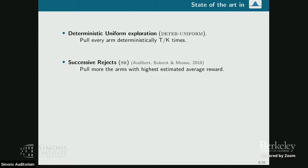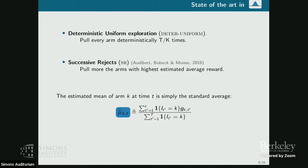Now let's look at the state of the art in the stochastic setting. The most basic approach is uniform exploration: divide budget T equally among K arms, giving T/K pulls each. That's not the smartest thing, because once you start pulling arms, some are clearly suboptimal, so you can save budget by stopping them and focusing on the more uncertain ones. This leads to successive reject: an elimination algorithm that progressively rejects arms and focuses pulls on the remaining candidates.